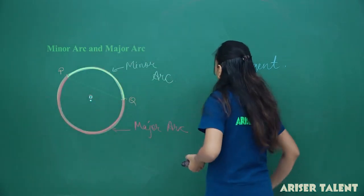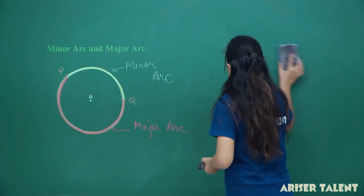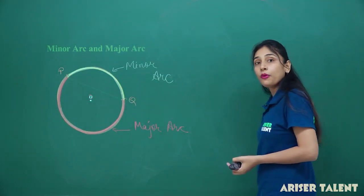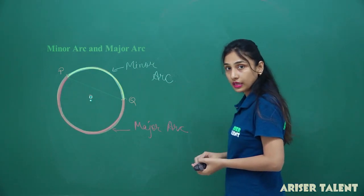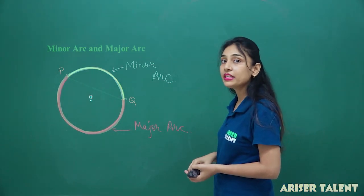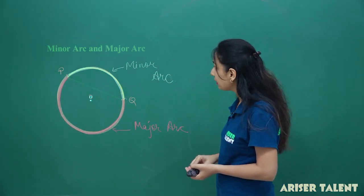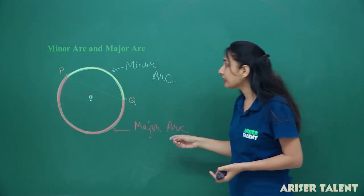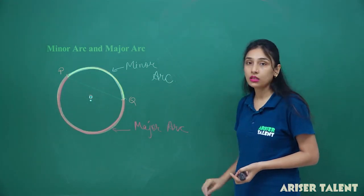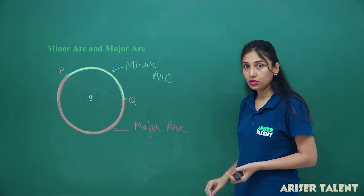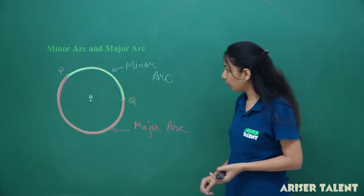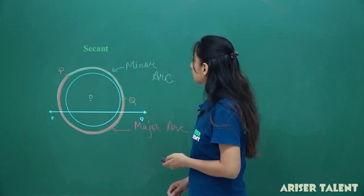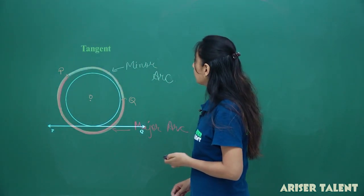Now, can you tell me at a particular point when the minor arc and major arc can be equal? Tell me when.